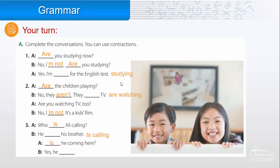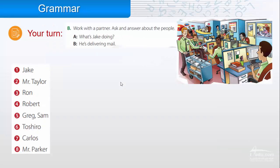Now here, instant Exercise B. We have a picture. In the picture, there are eight people. Ask and answer about the people. For example, 'What's Jake doing?' 'He's delivering mail.' Jake is number one. This is number one. He is delivering the mail.